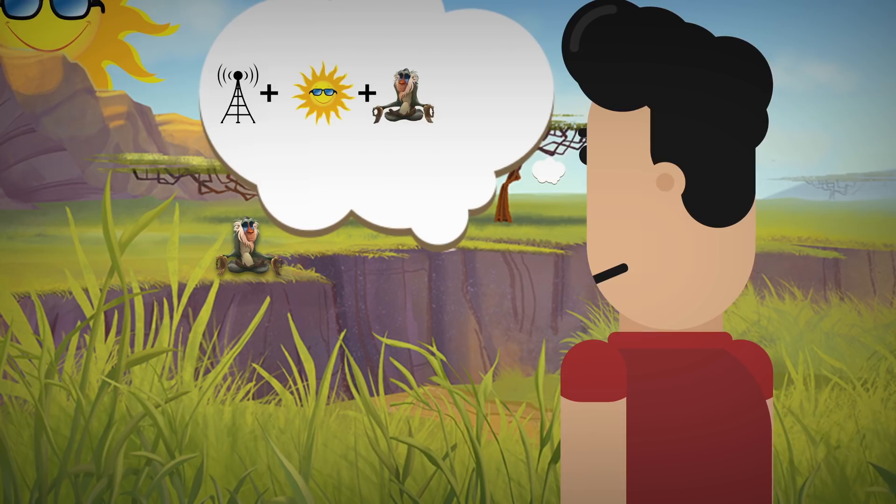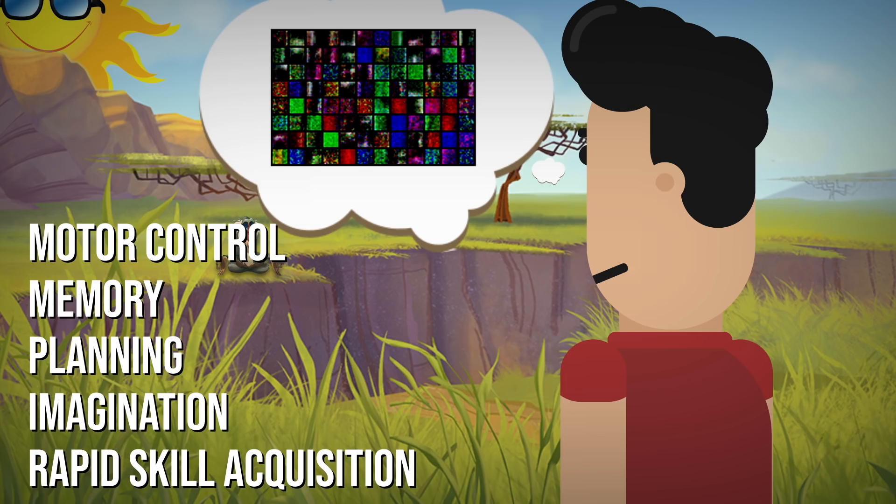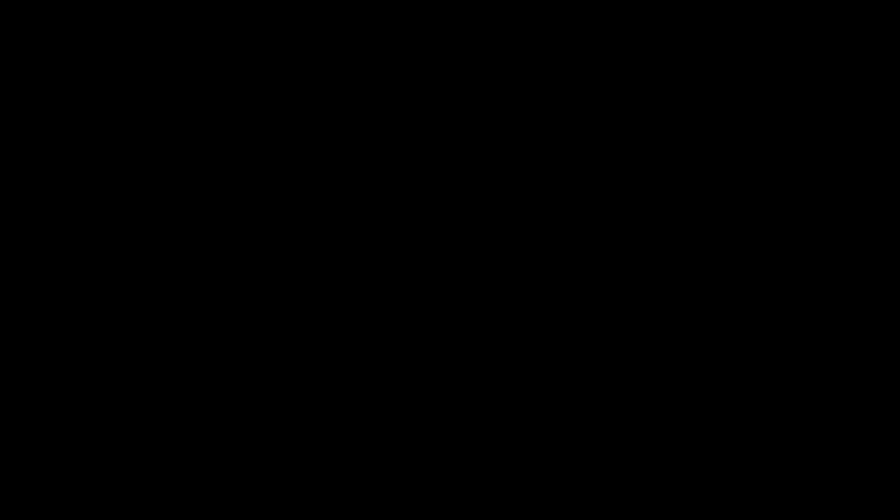our brain would learn to form representations of the environment that would support not only classifications of what we see, but also motor control, memory, planning, imagination, and rapid skill acquisition, all related to the environment. All of this without any teacher telling us these things. We would do it ourselves.